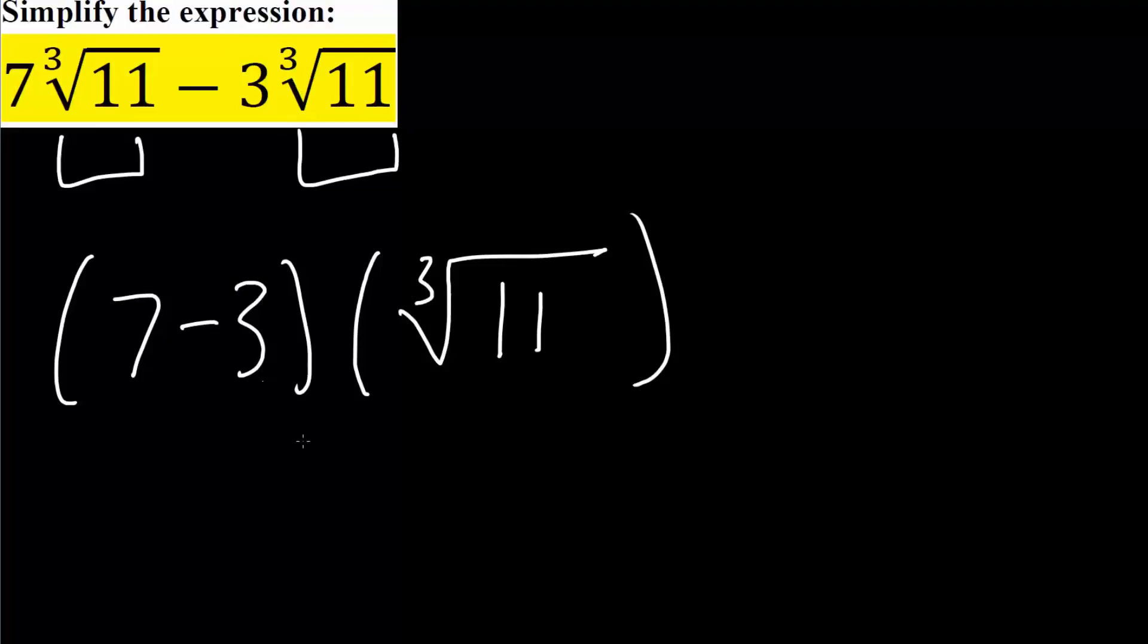And so we want to simplify this. So 7 minus 3 is 4, 4 times this term right here, and that would be the final answer and we just need to box the answer in.